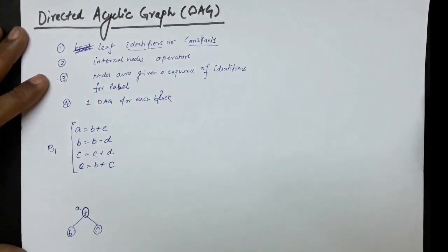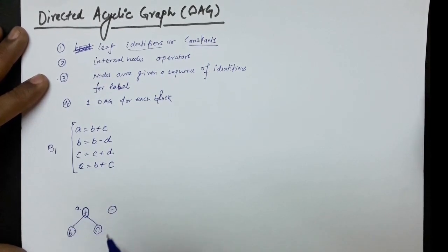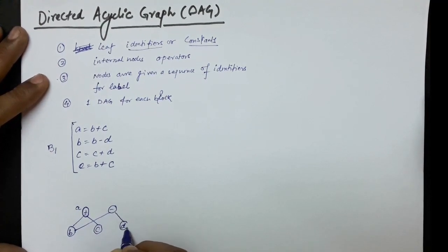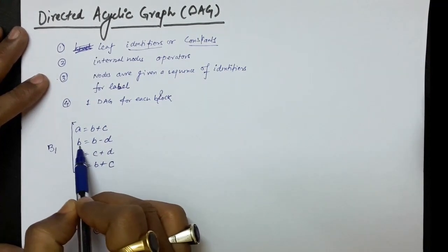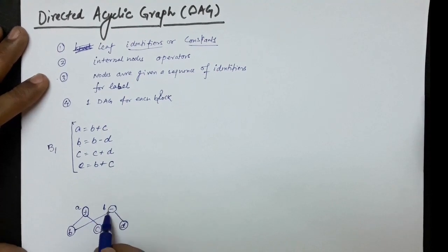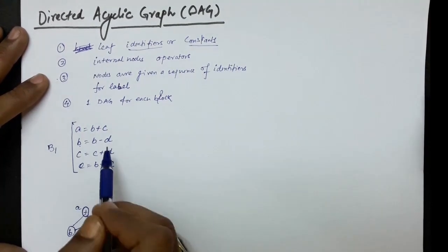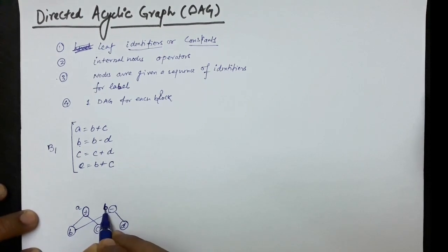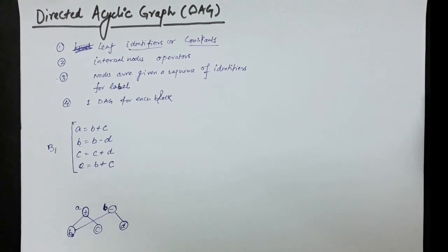After this, the next operation is B minus D. For performing B minus D, we will not create the B node again. Once it has been created, we will use the reference of it only. Since D has not been made earlier, we will make a new node for D. B minus D operation has been performed and the result is saved in B. To distinguish between the original B and the new B, let us name the original B as B0.